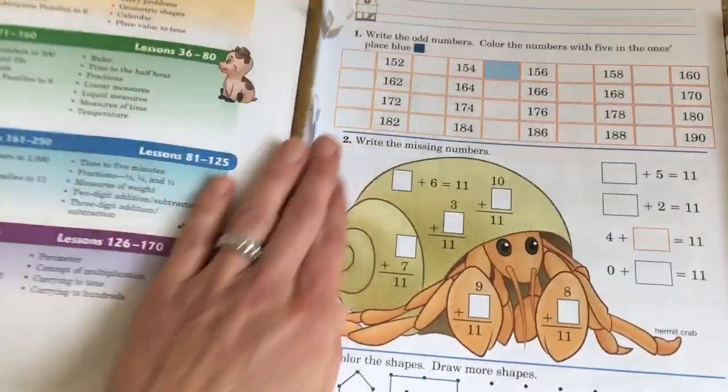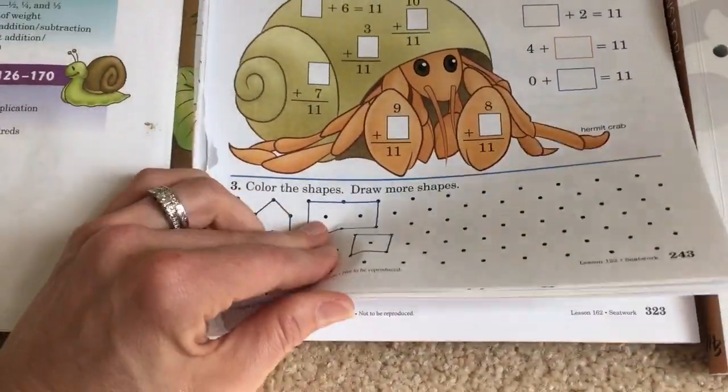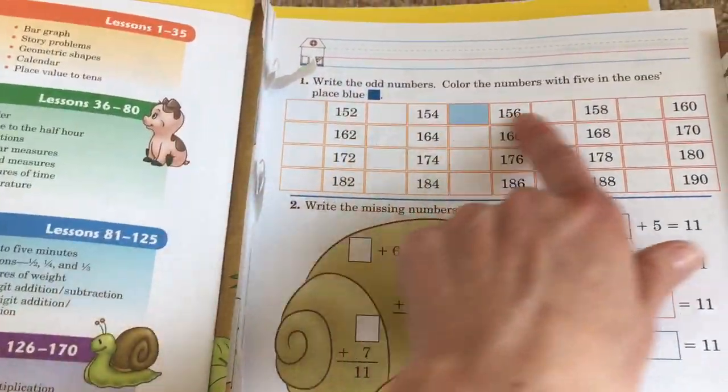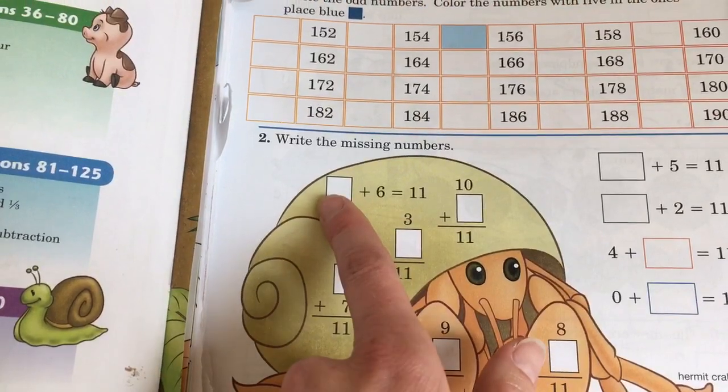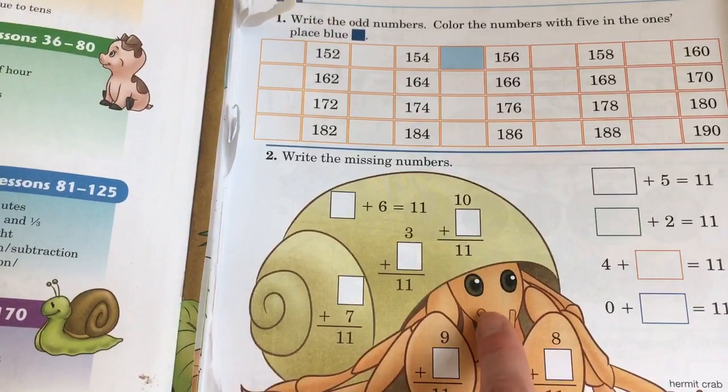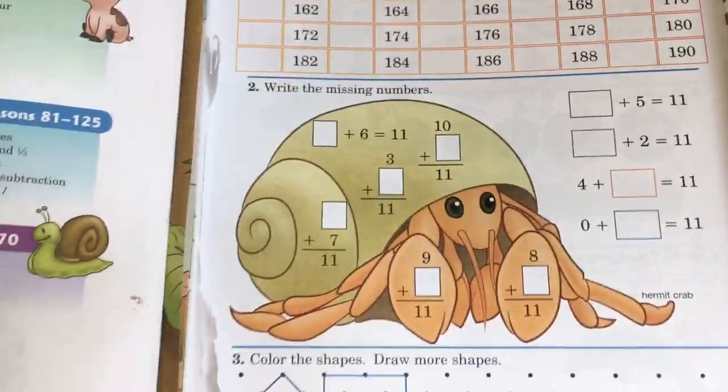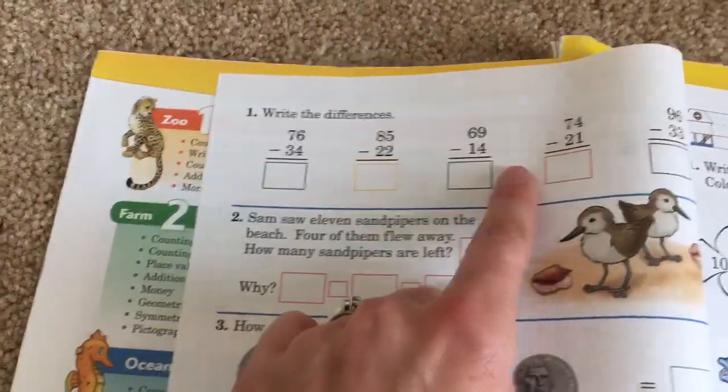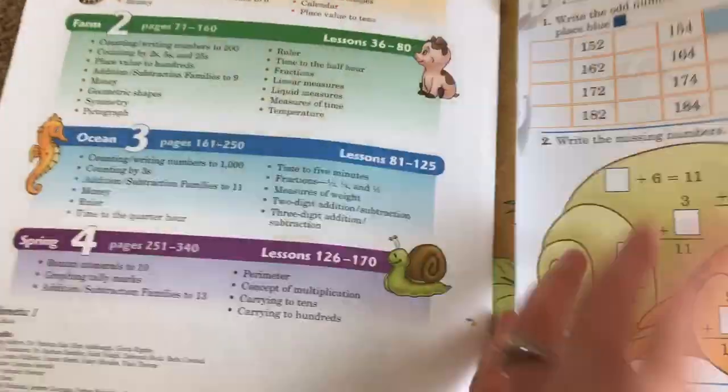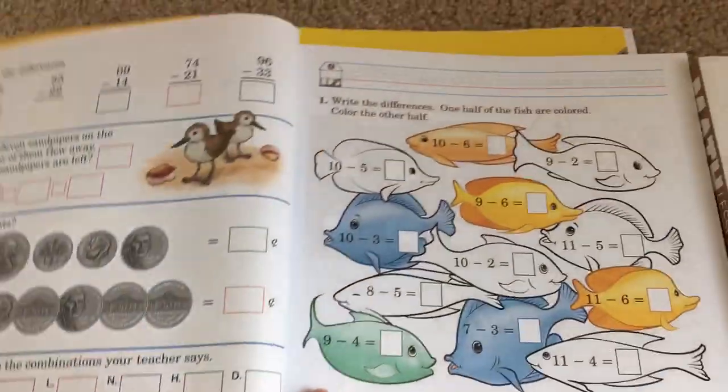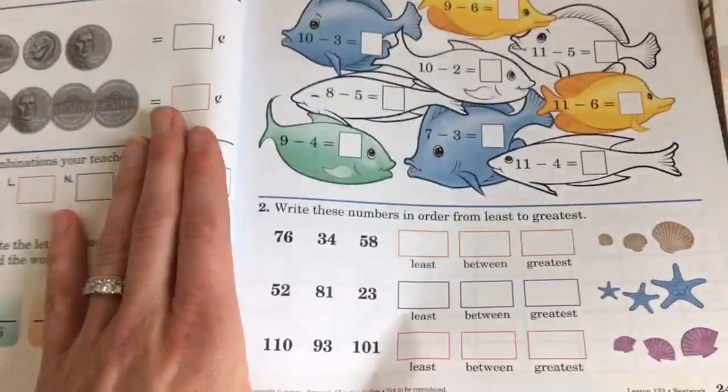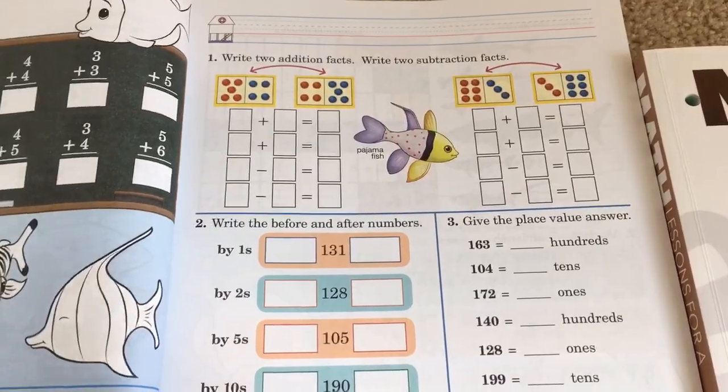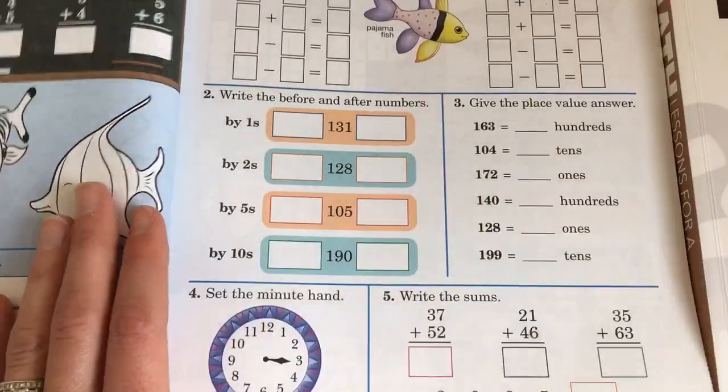Look at what he's doing - this is Lesson 122, goes up to Lesson 170. Write the odd numbers out, write the missing numbers. What plus 6 is 11? 10 plus what is 11? It's a very thorough math. It has lots of money, addition. He's actually subtracting two digits, adding two digits. Just a lot of addition, subtraction, lots of review, lots of work. But it's working well. He's doing great with his math facts and has come a long way in this book.